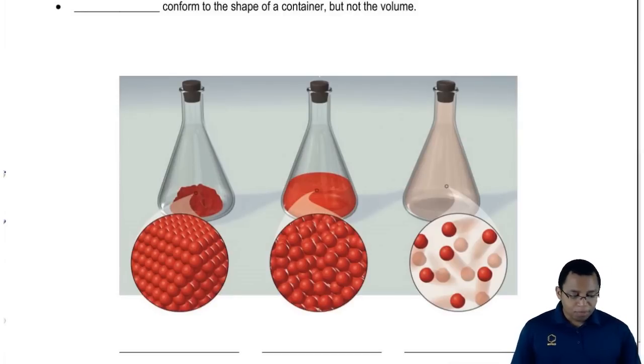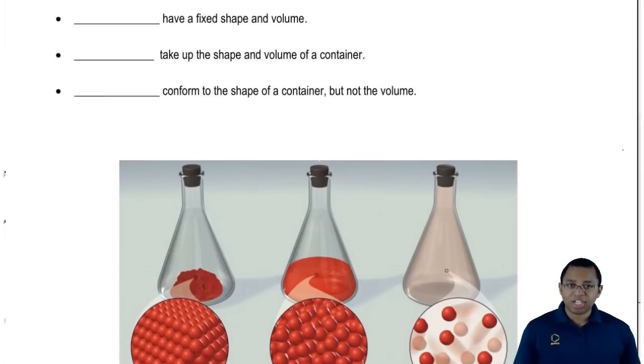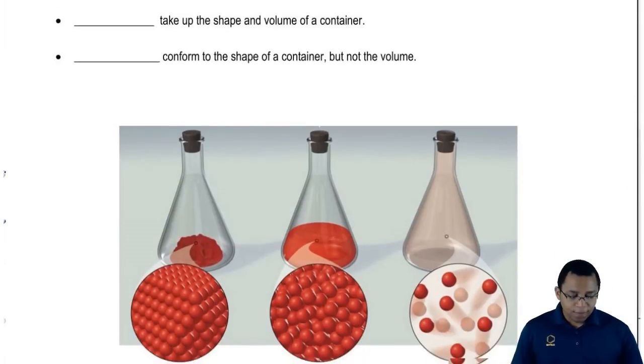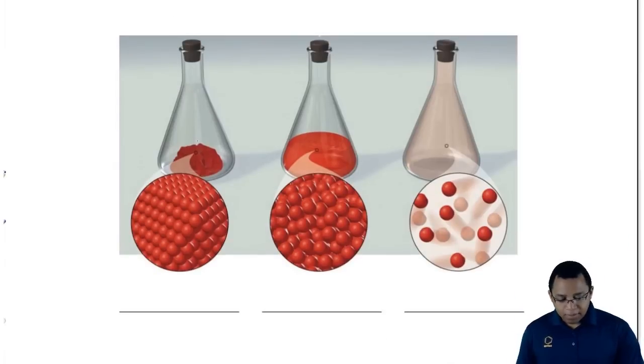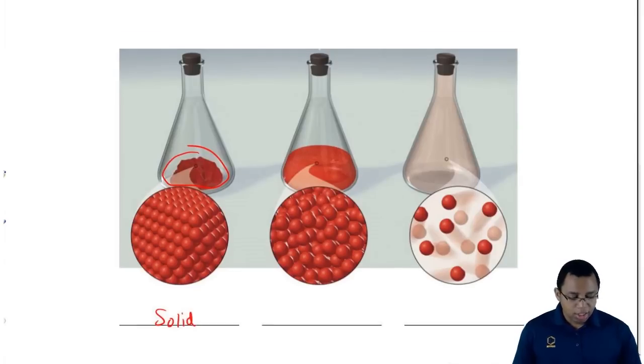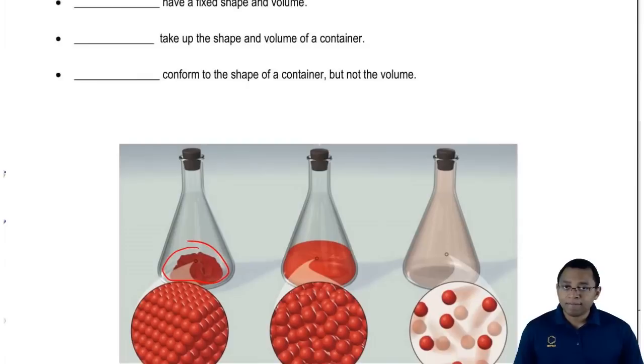In the first blank, we're going to say these have a fixed shape and volume, meaning that if I put them in a container, they hold on to their properties, their physical features. If we take a look at this first container, we can see that we have some type of solid in there, maybe a lump of clay, a lump of dirt. That's going to be our solid. Solids don't take on the shape of the container or fill up the volume.